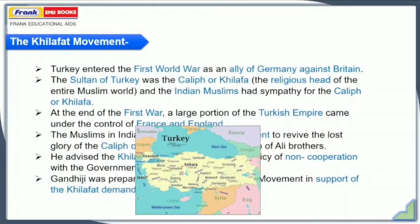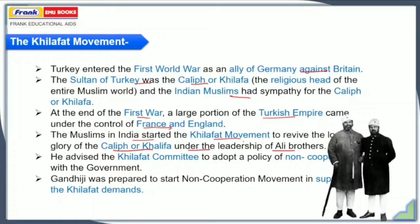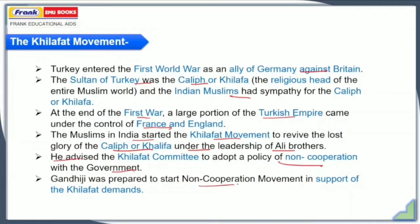The next reason was the Khilafat movement. Turkey entered the First World War as an ally of Germany against Britain. The Sultan of Turkey was the Caliph or Khalifa, the religious head of the entire Muslim world. This is why Indian Muslims had sympathy for the Khalifa. But at the end of the First World War, a large portion of the Turkish or Ottoman Empire came under the control of France and England. Hence, the Muslims in India started the Khilafat movement to revive the lost glory and restore the territories of Khalifa, under the leadership of Ali Brothers — Shaukat Ali and Muhammad Ali. Gandhiji advised the Khilafat committee to adopt a policy of non-cooperation with the government, and he was prepared to start the non-cooperation movement in support of Khilafat demands to unite Hindus and Muslims of India.